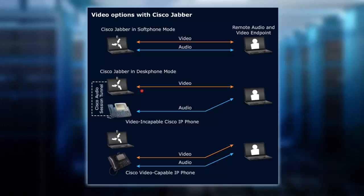Now let's move into desk phone mode. In desk phone mode, if the phone is not video capable — they call it video incapable — then we've got two things going on here. Desk phone mode is smart enough to know that behind the scenes this phone is not video capable. So if we want to have a video phone call, we'll have the audio portion using the Cisco audio session tunnel protocol to set up the audio session and stream that over to the endpoint. And the video will be coming from our laptop or desktop — the Jabber client will be controlling video coming out of the PC, and the audio will be streaming out via the phone.